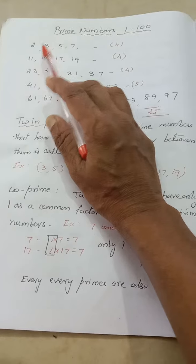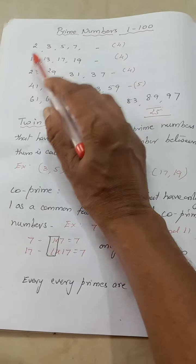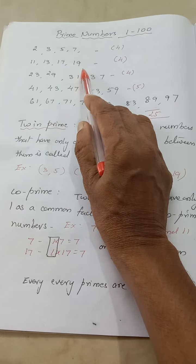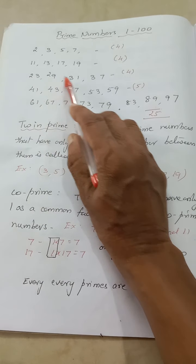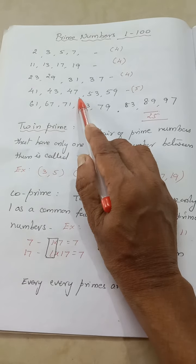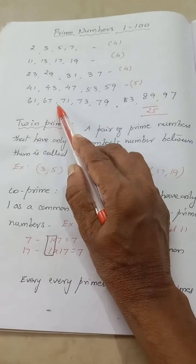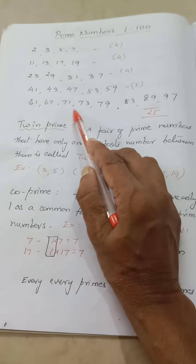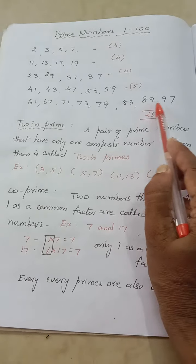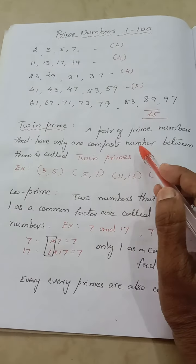The prime numbers are once again: 2, 3, 5, 7, 11, 13, 17, 19, 23, 29, 31, 37, 41, 43, 47, 53, 59, 61, 67, 71, 73, 79, 83, 89, and 97. So totally 25 numbers.